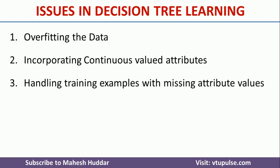The third issue in decision tree is handling training examples with missing attributes. The decision tree works well with data which has some sort of error, but if you want to use decision tree, what we need to do is — if you have some missing attributes, we need to fill those particular missing attributes with proper values.